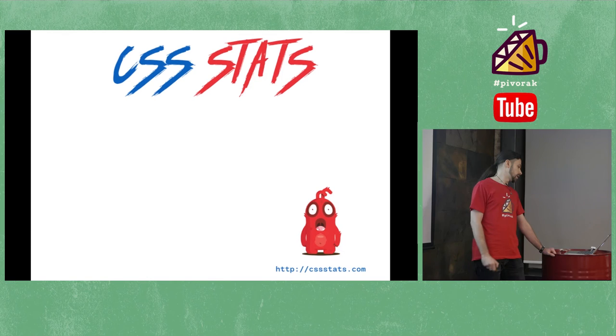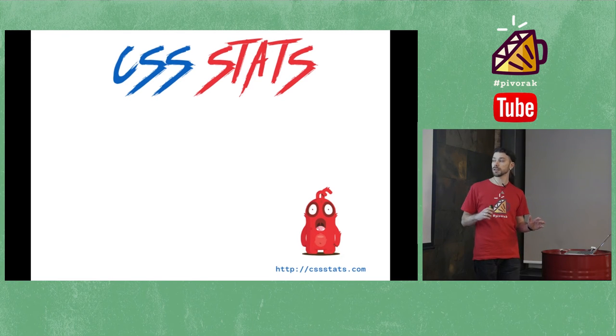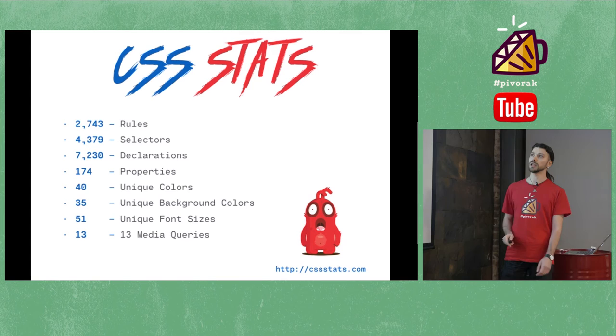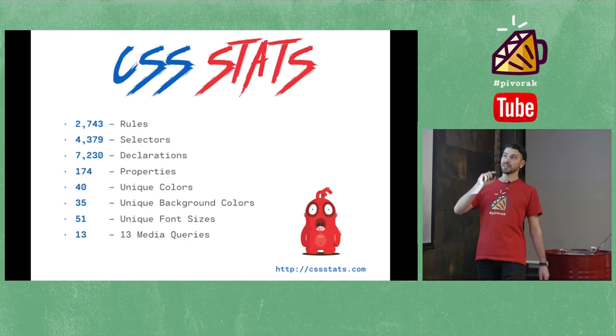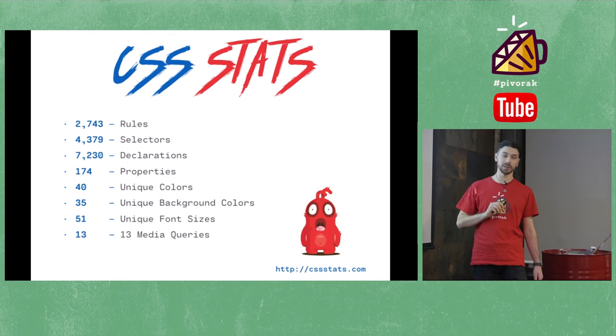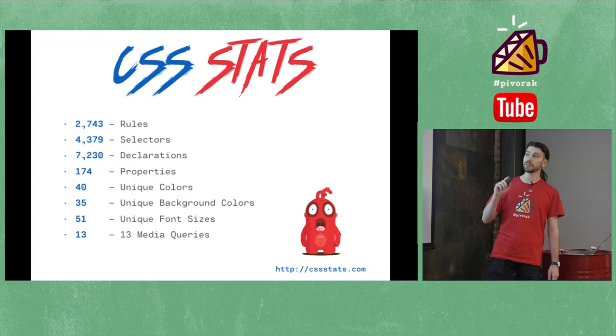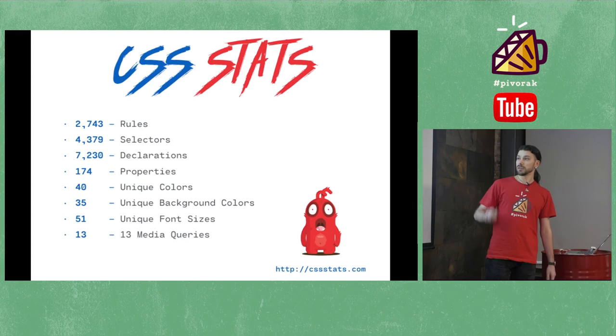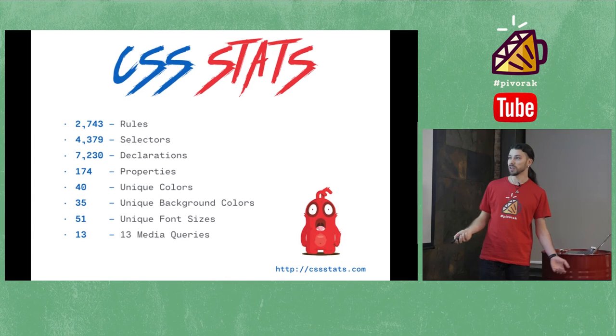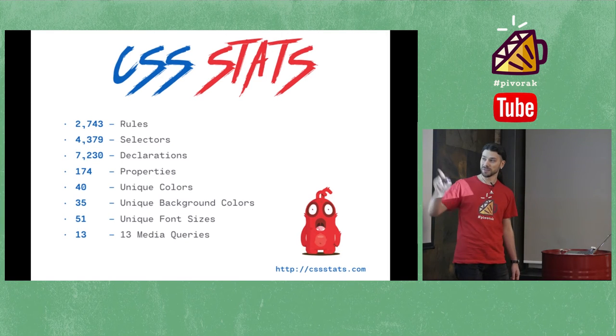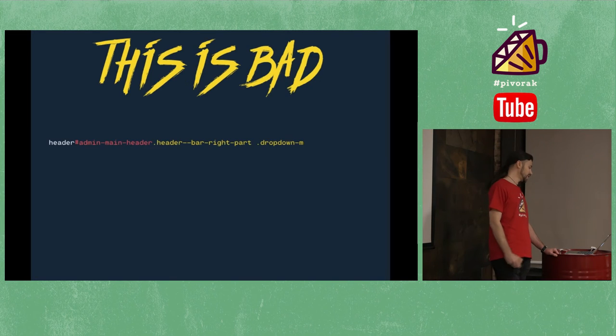Another website called CSS Stats shows more details in a better way. We have almost 3,000 rules, more than 4,000 selectors, more than 7,000 declarations in CSS, and only 174 properties. Imagine you can only create 174 classes and apply those inside the HTML. That's everything you need to make those pages work. We don't need 7,000 declarations. Other issues - 40 unique colors, 35 unique background colors, and 51 unique font sizes. We're not responsive but we have 30 media queries.